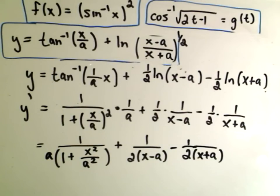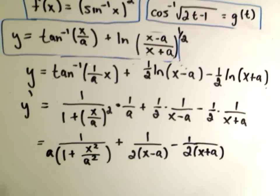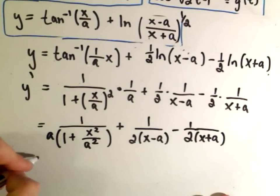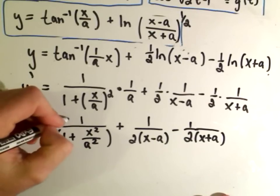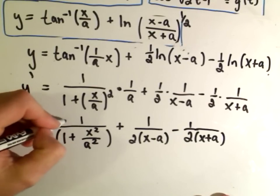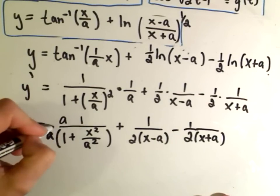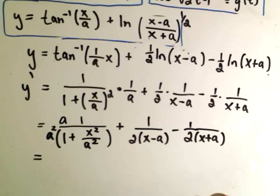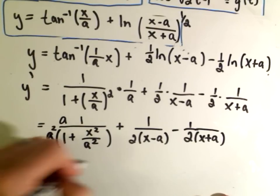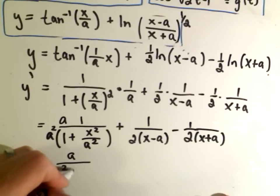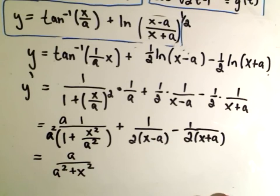We could actually multiply top and bottom of the first fraction by an extra a. So that will give me a on top and a squared on the bottom if I multiply top and bottom by an extra a. So on top I'll get a. If I distribute, I'll get a squared plus x squared. And then again, I'm not going to do much of anything with the rest of it.